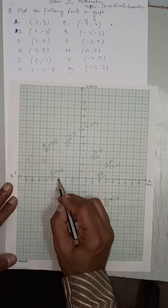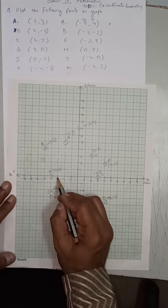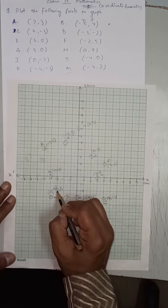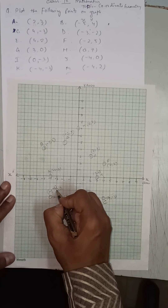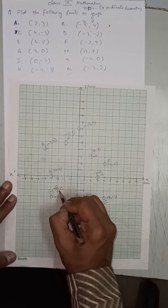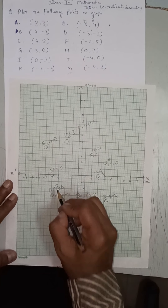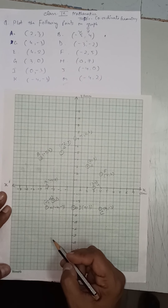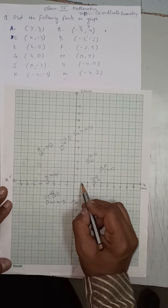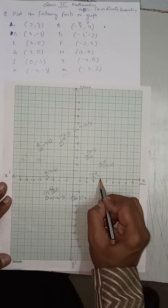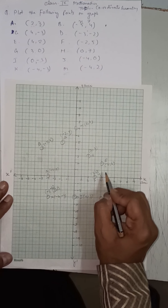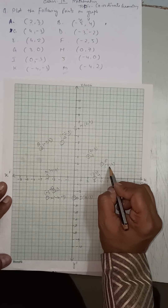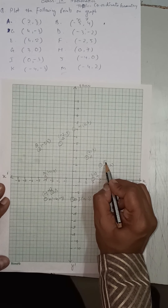At the intersecting point we make a dot and draw a circle. Now point E is (4, 2). 4 is positive x: 1, 2, 3, 4. 2 is positive y, so we go upward: 1, 2. So (4, 2) is point E.